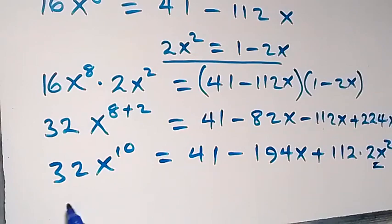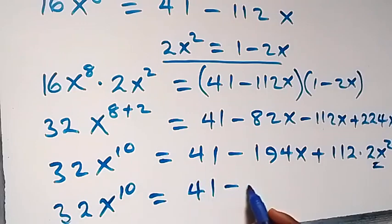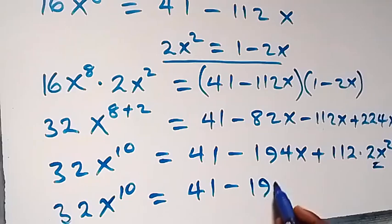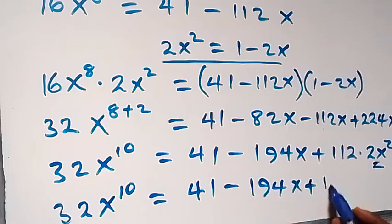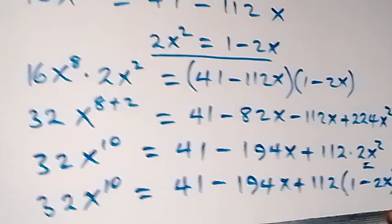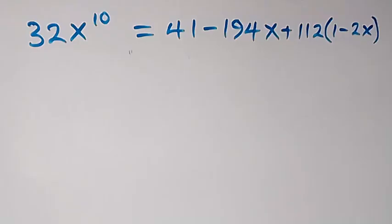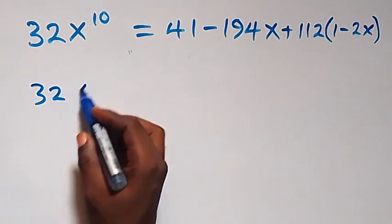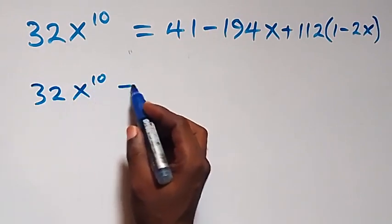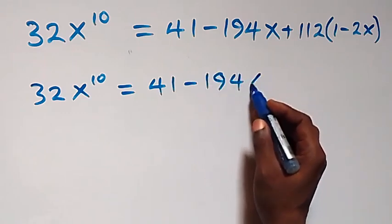Substituting, this equation becomes 32x¹⁰ equals 41 minus 194x plus 112 times (1 minus 2x). Opening this bracket using 112, we get 32x¹⁰ equals 41 minus 194x plus 112 minus 224x.